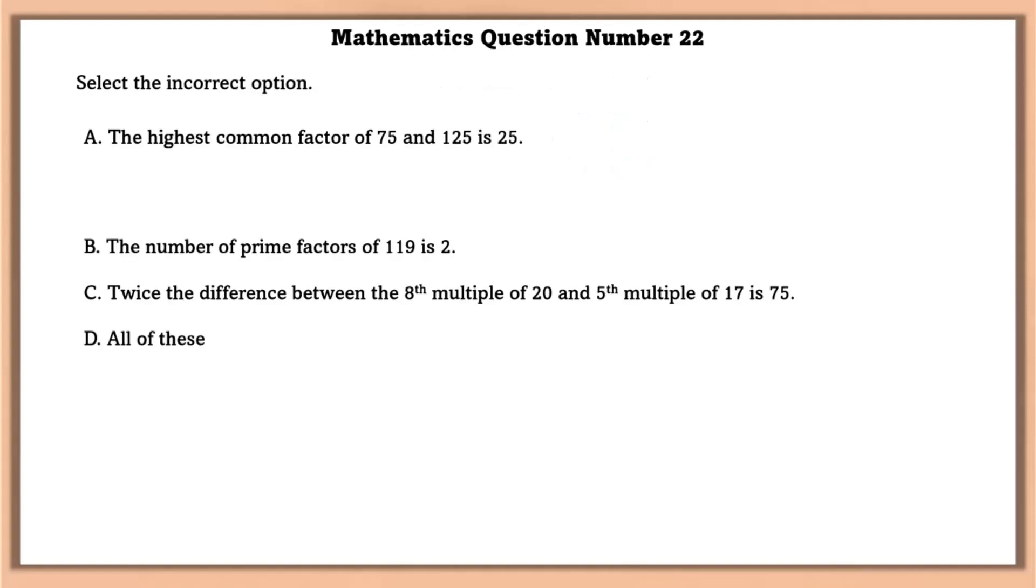Mathematics question number 22. Select the incorrect option. The highest common factor of 75 and 125 is 25. Yes, this is true. The number of prime factors of 119 is 2. Yes, this is also true.